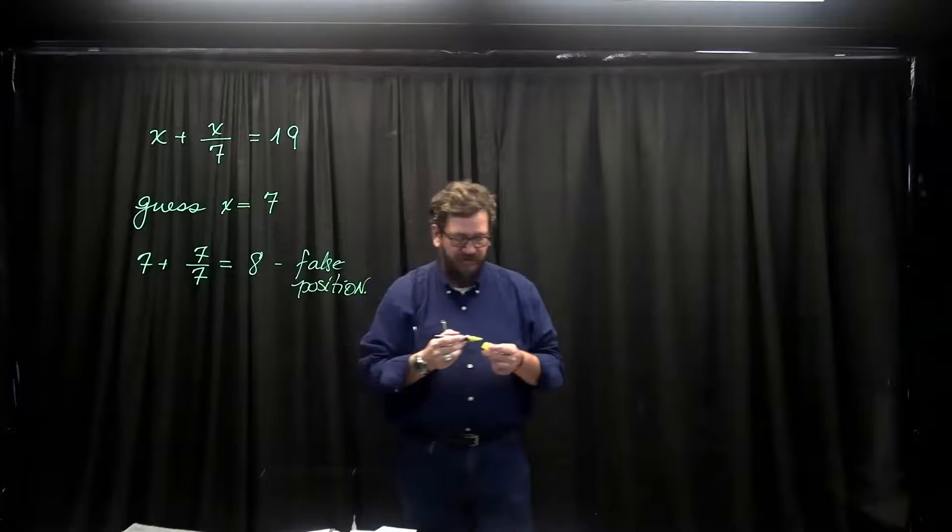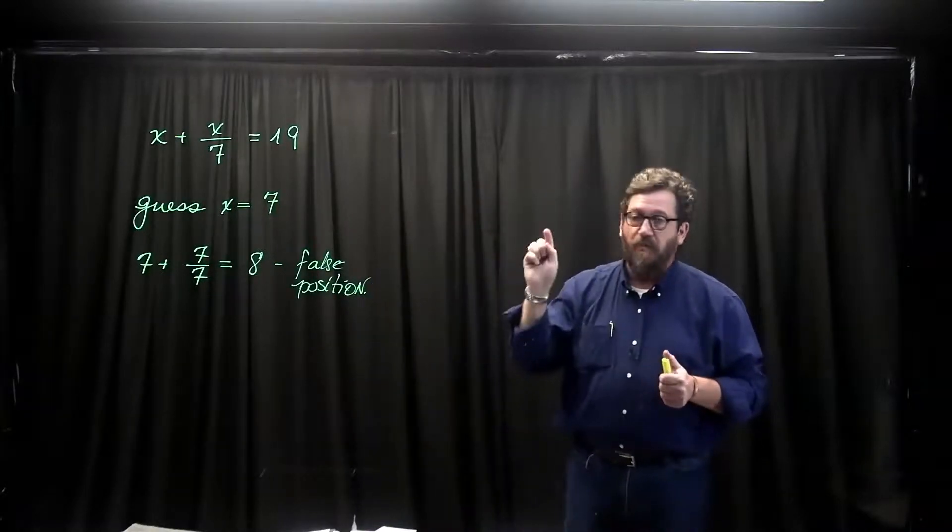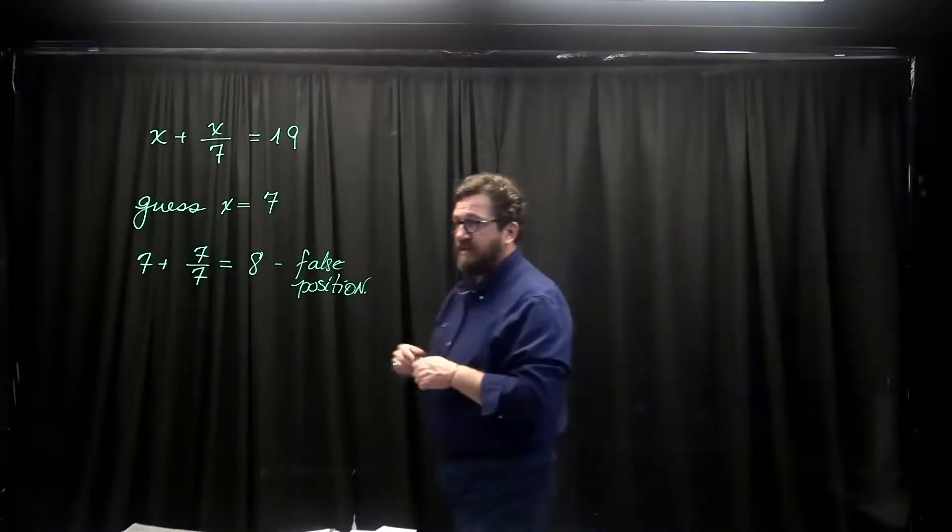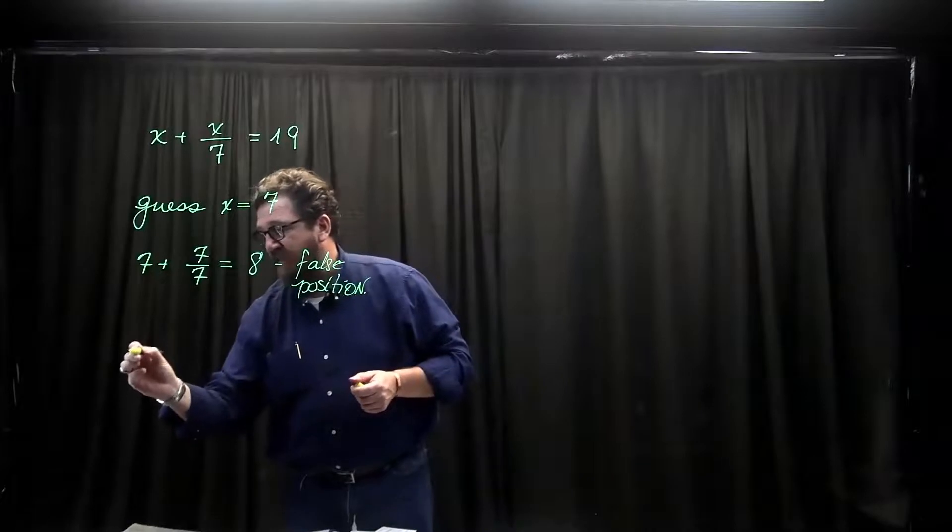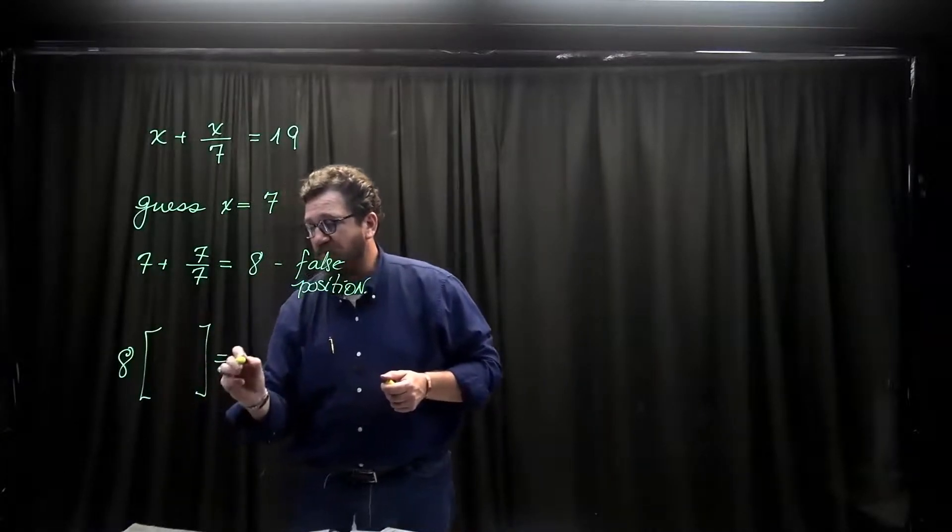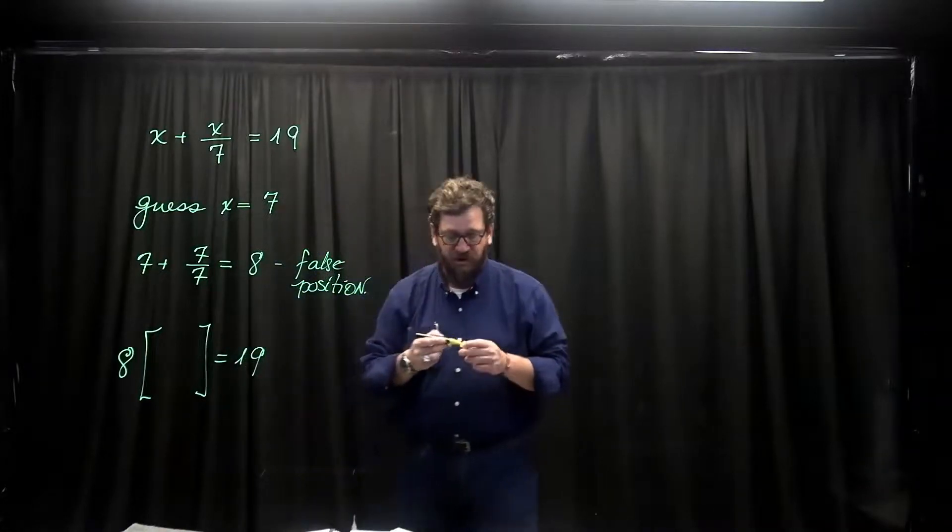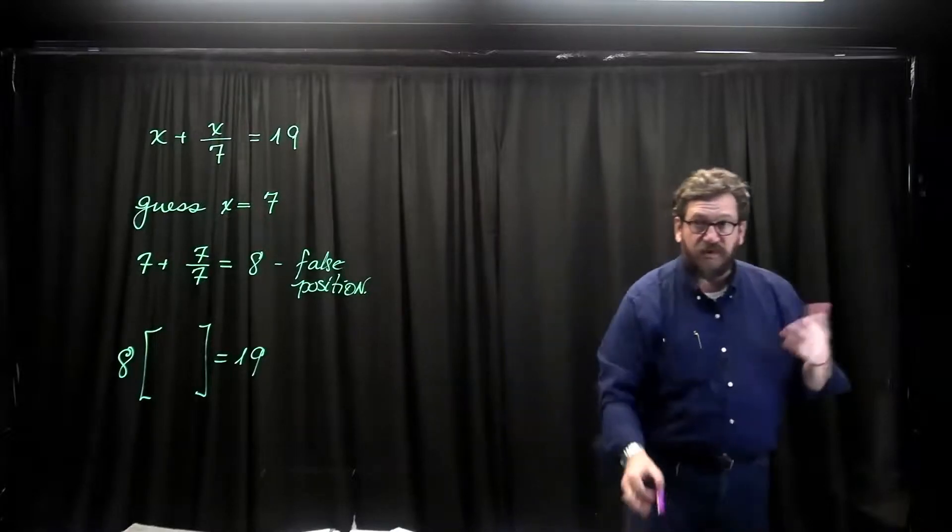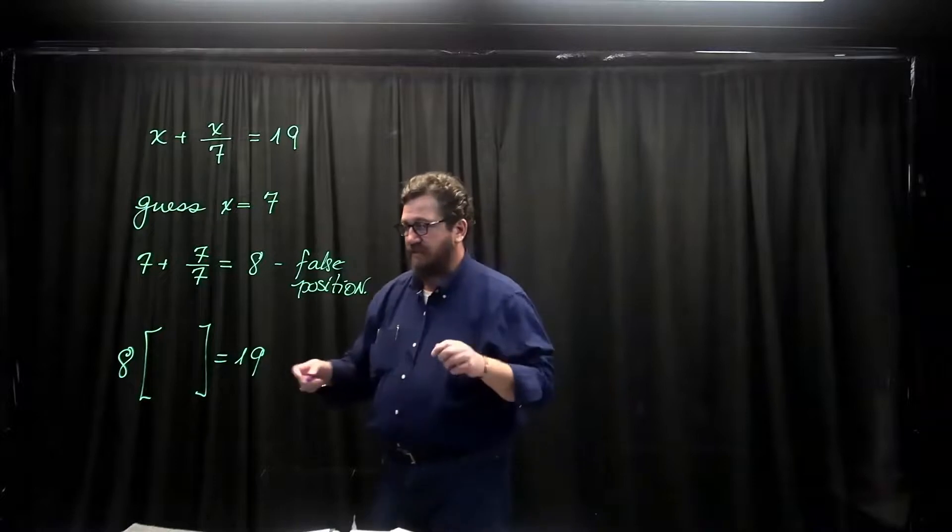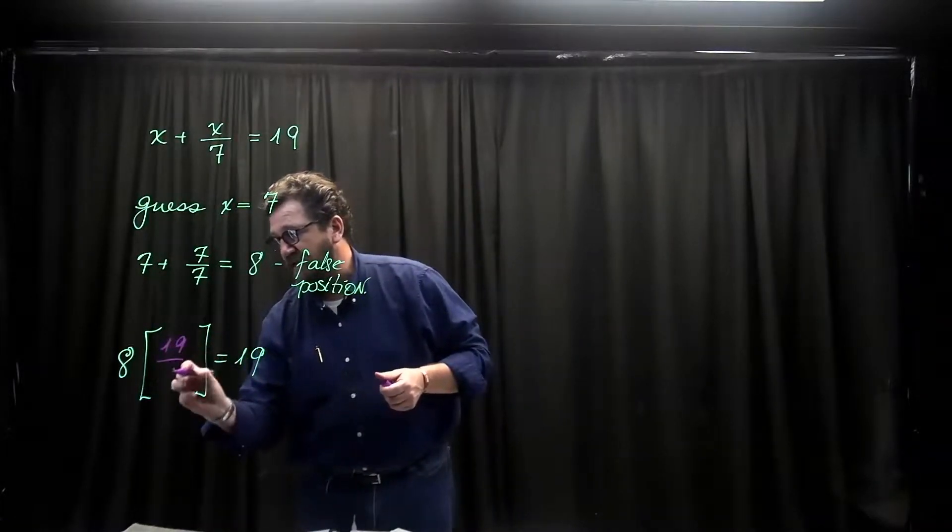But from this false position an Egyptian would say I can get from where I am now to where I need to go. Because the Egyptians did have this idea that eight times some number they don't know must be 19. And 19 is the true position you want to get to. So they said we just got to figure out what the missing number is. And we know that they had this ability. It's not that hard. It's going to be 19 over 8.